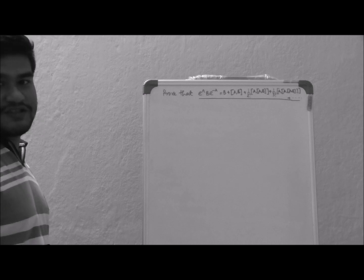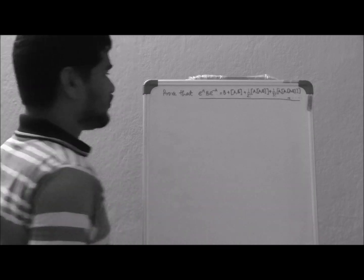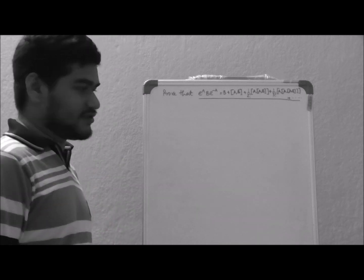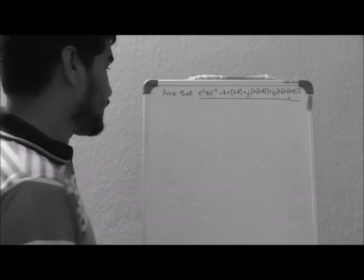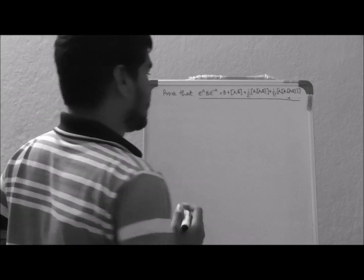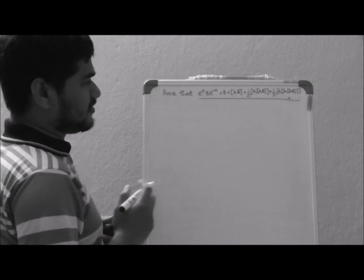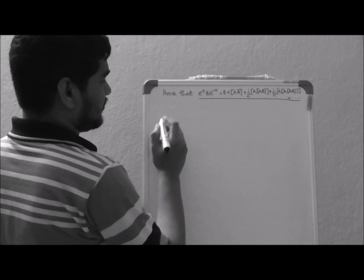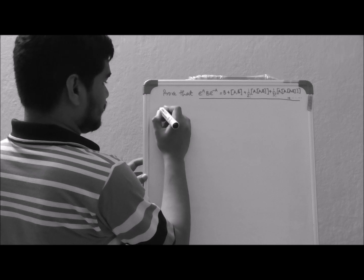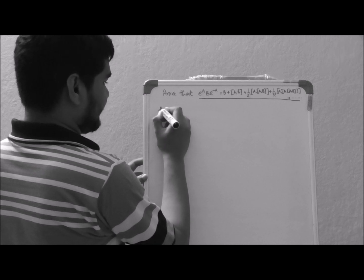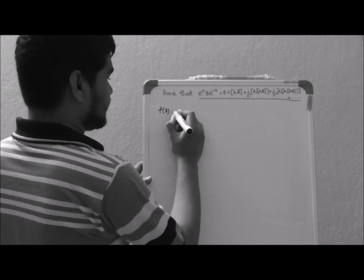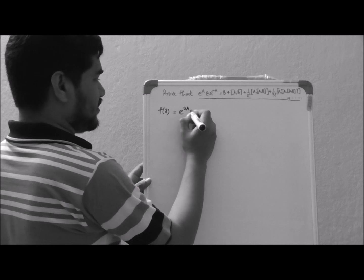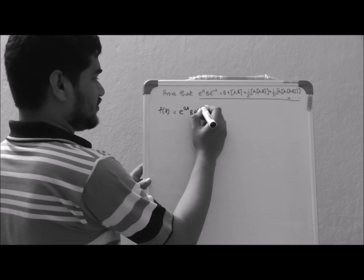You can see it quite easily and it is quite famous. We have to prove it today, where A and B are two operators. So let's try to prove it. First of all, let us take a function of lambda and write: f(lambda) is a function which is equal to e to the power lambda A, B, e to the power minus lambda A.